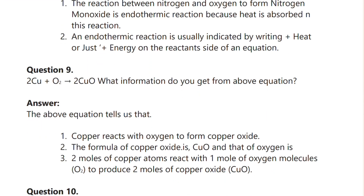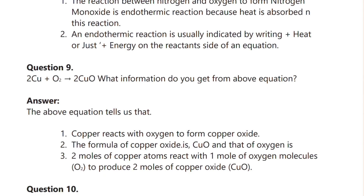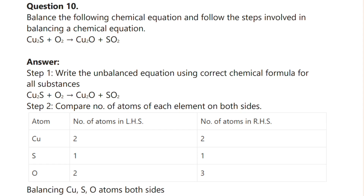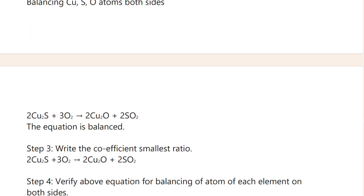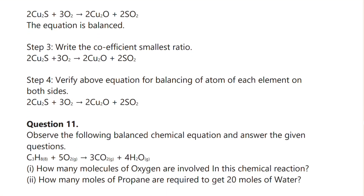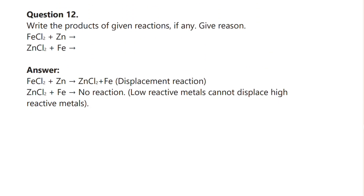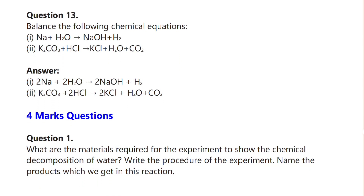Question number eight has its answer given. Question number nine asks: 2Cu + O₂ → 2CuO — what information do you get from this equation? The answer is already given. Question number ten asks you to balance the following chemical equation and follow the steps involved in balancing chemical equations. Questions eleven, twelve, and thirteen are also here — observing balanced chemical equations, writing products of given reactions, and balancing the following chemical reactions.